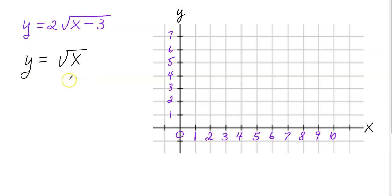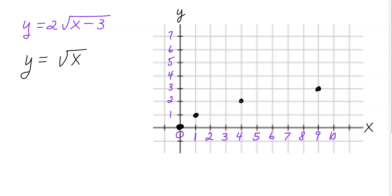Let's go ahead and graph this parent function — we've already done that, so let's do it a little more quickly this time. These are my x values and I'm taking the square root of each one from just the parent function. The square root of zero is zero, the square root of one is one, the square root of four is two, and the square root of nine is three. I'm not gonna connect the points yet — I'll just leave them separate and only connect my final graph. The black points represent y equals the square root of x.